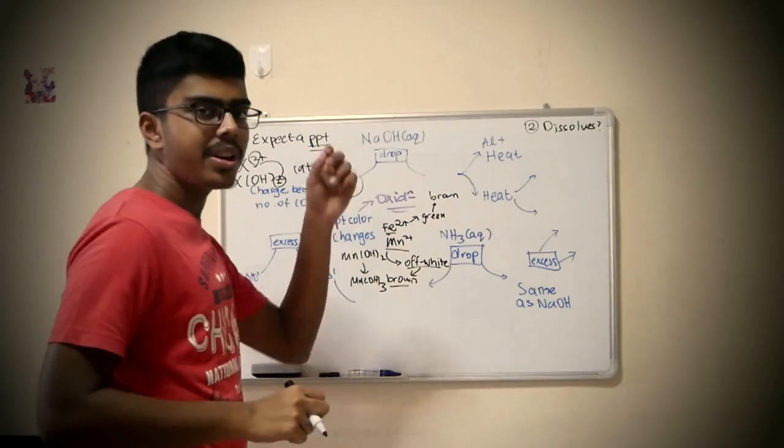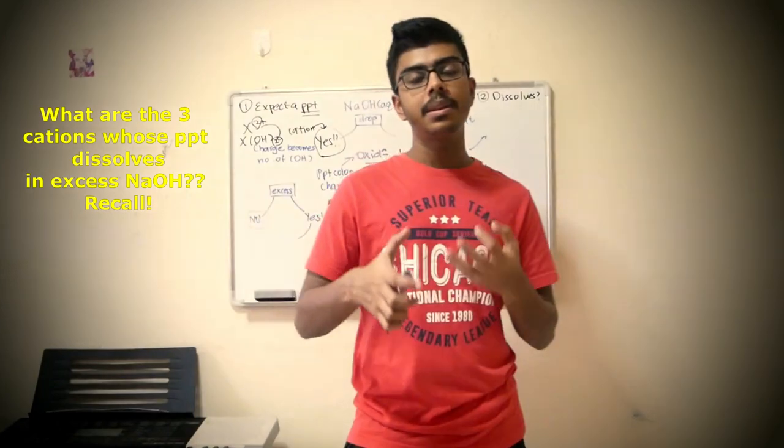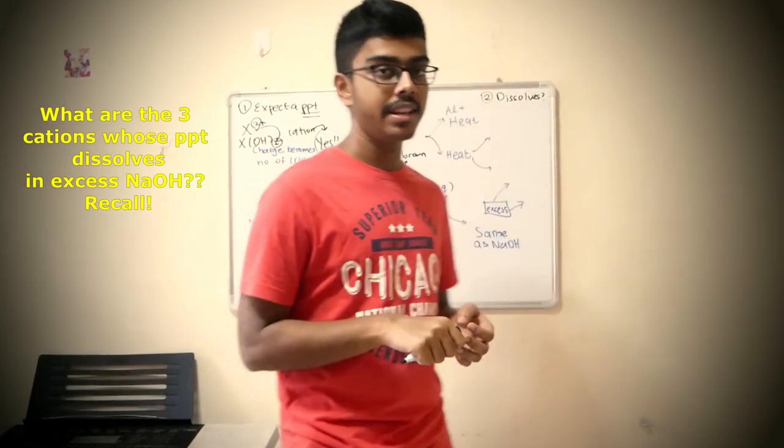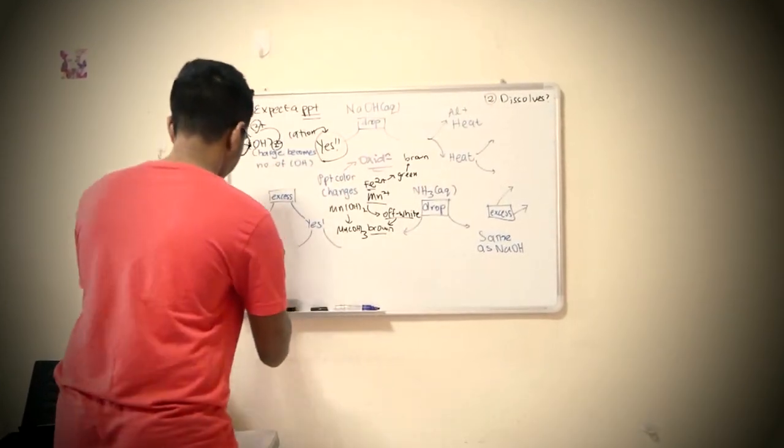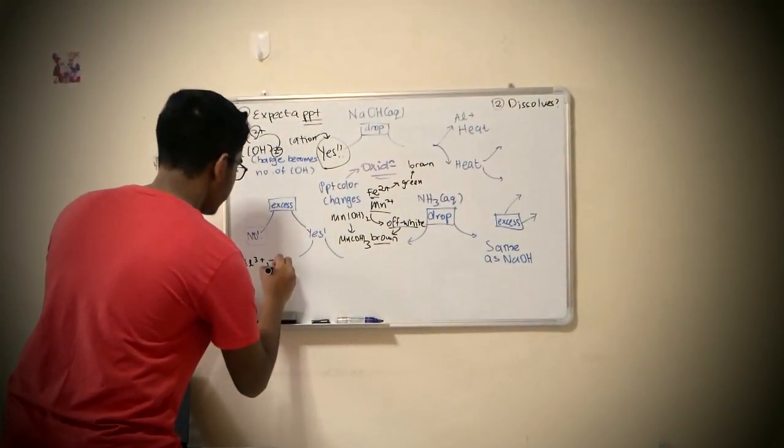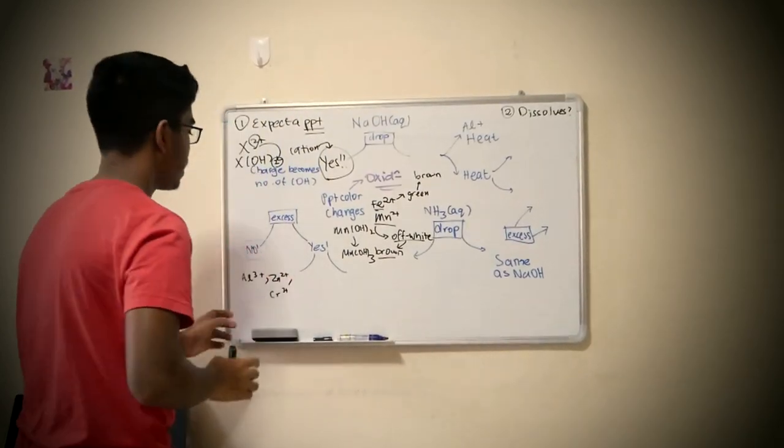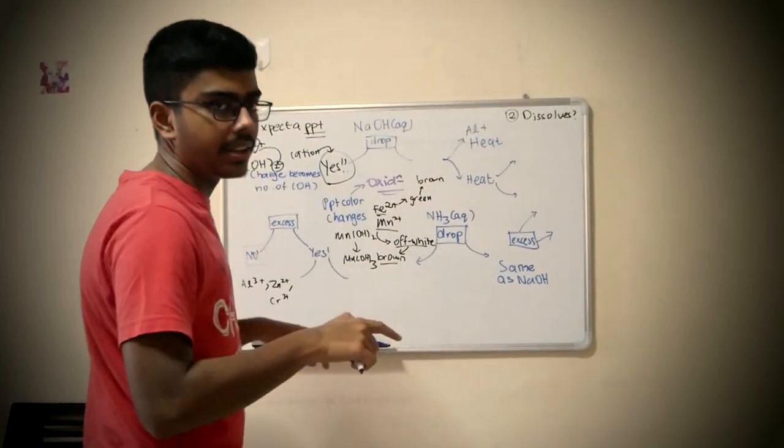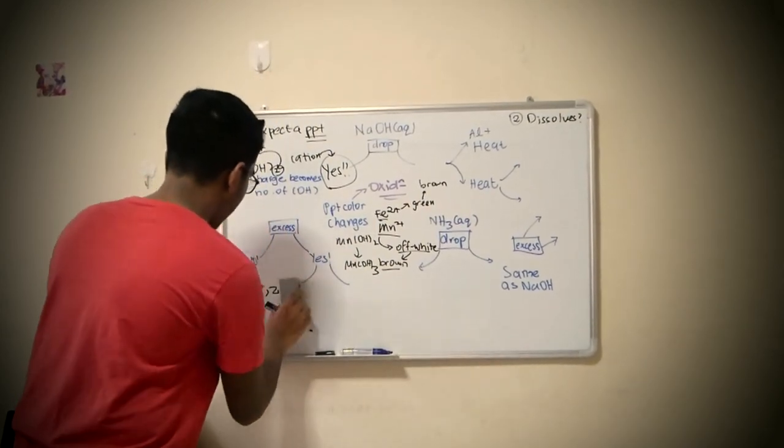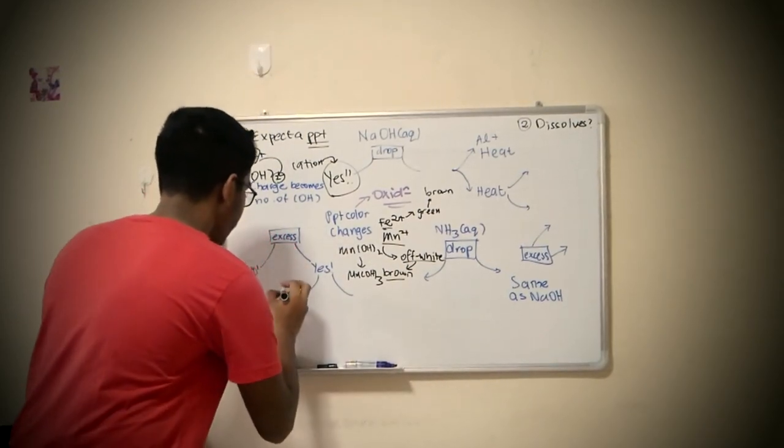Now if it dissolves, we're going to split this into two parts. Let's think of the 3+ cation with the precipitate which will dissolve in excess NaOH, which is aluminum, zinc, and chromium. Now these can be subdivided, and I'll tell you why, how you can memorize the complex that's being formed.